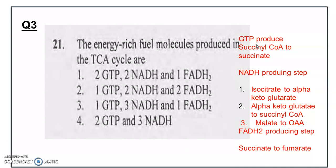The first NADH-producing step is isocitrate to alpha-ketoglutarate. The second is alpha-ketoglutarate to succinyl-CoA, and the third is malate to oxaloacetate conversion. FADH2 is produced in the succinate to fumarate conversion. So the answer is one GTP, three NADH, and one FADH2 per citric acid cycle. But if counting from one molecule of glucose, these values are doubled because one molecule of glucose produces two molecules of pyruvate and thus two molecules of acetyl-CoA enter the citric acid cycle. Option three is the correct answer.